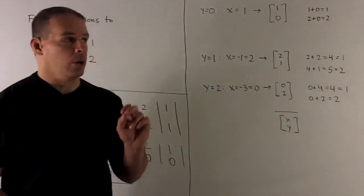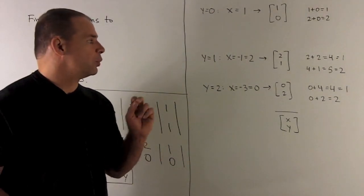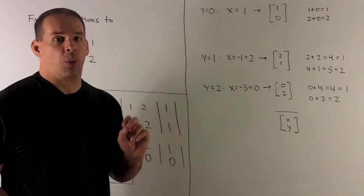So we do each of those, and what are we going to note? We're going to get our three solutions out: 1, 0; 2, 1; and 0, 2 for our vector x, y.